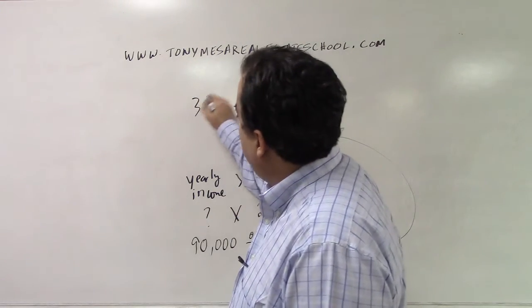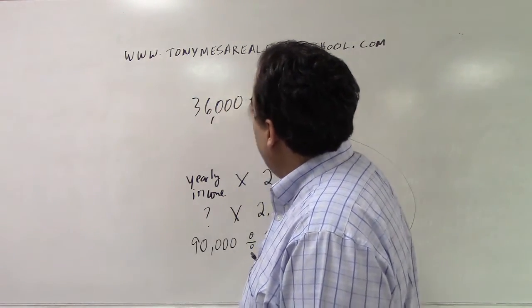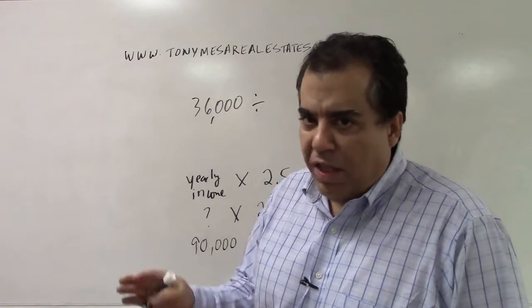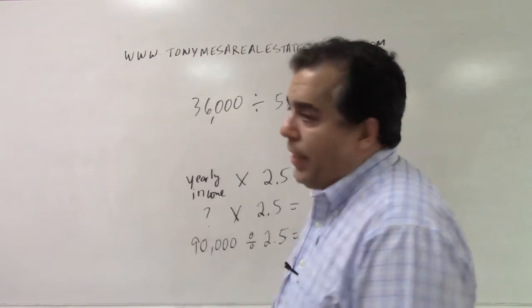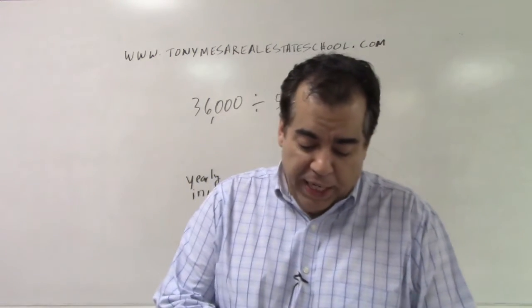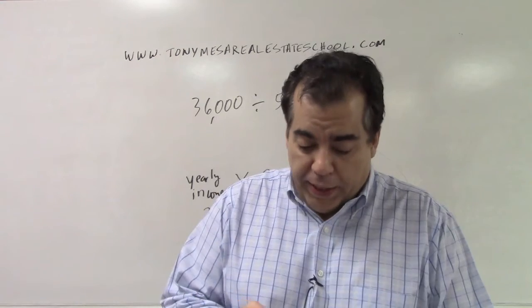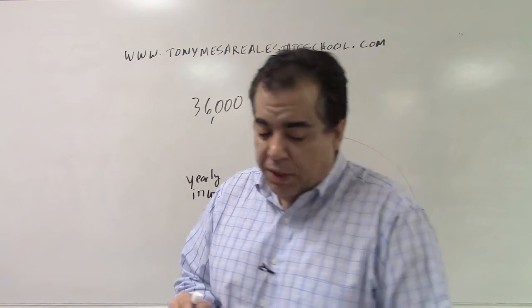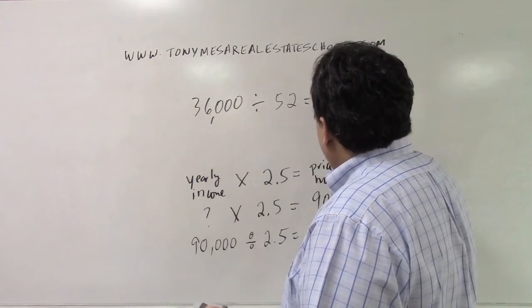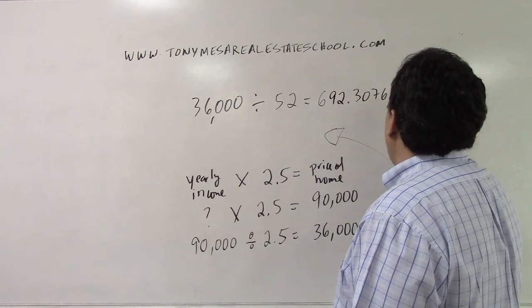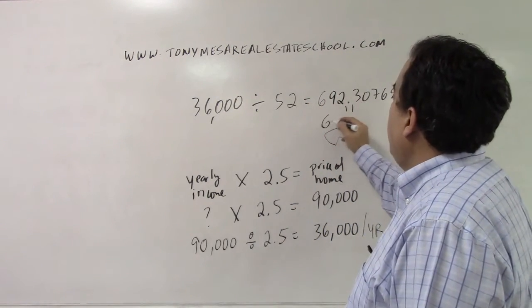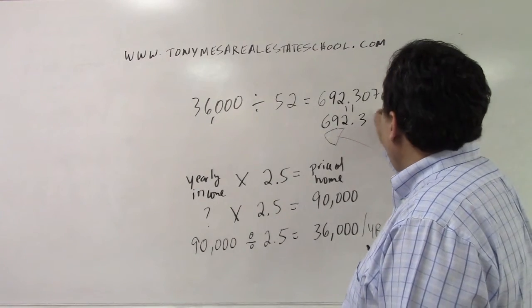So you take $36,000 for the year, and you don't divide by 12 and then by 4. That's going to give you the wrong answer. You divide by 52 weeks in a year. There are 52 weeks in one year. So $36,000, the yearly income, divided by 52 weeks in a year, gives us $692.30769. If I round off to the penny, $692.31.